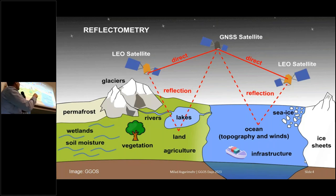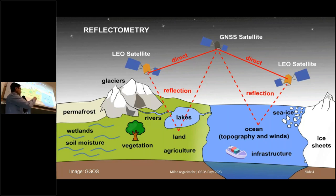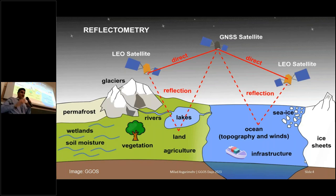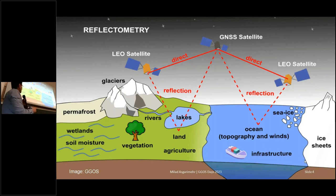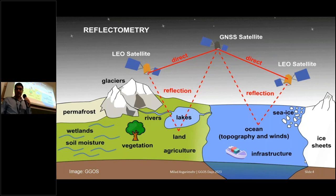What we are doing now is putting the GNSS receiver on a LEO satellite. The GNSS signals reach the surface, bounce up from the surface, and in space we again receive the signals. Depending on which media is reflecting the signals, we can extract a variety of geophysical parameters, like wind speed, ocean surface, land, vegetation and vegetation state, soil moisture, hydrological parameters. We can also study glaciers and sea ice, which are directly related to climate change.